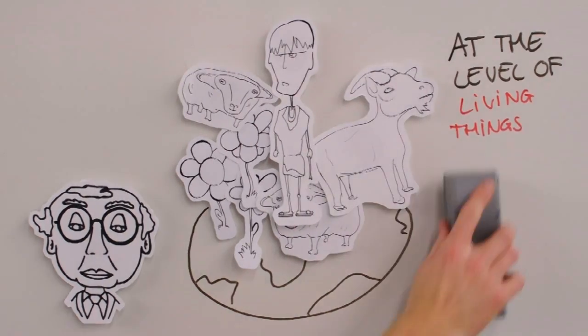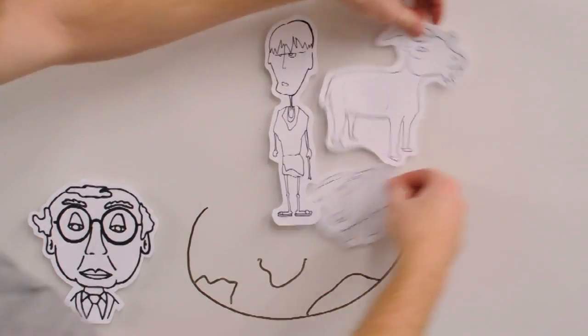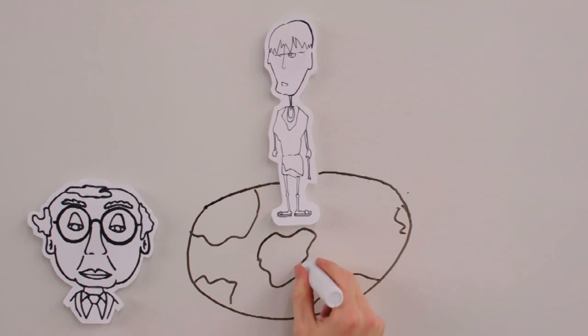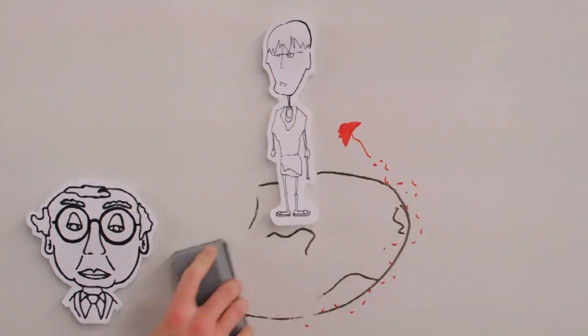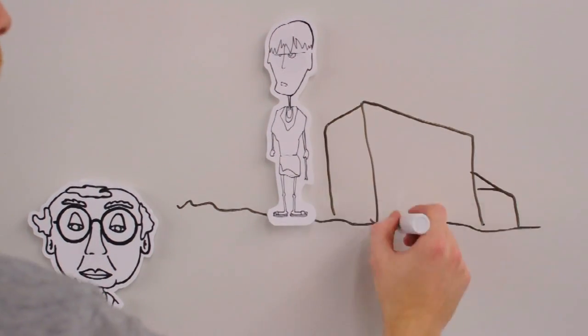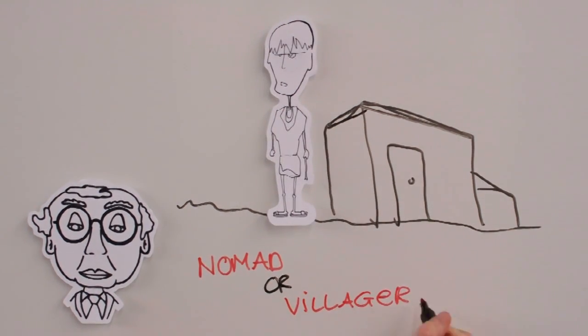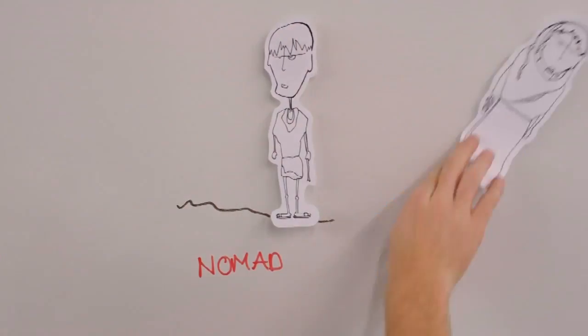With that, there comes an equally powerful social revolution. Because now it became possible, more than that, it became necessary for man to settle. And this creature that had roamed and marched for a million years had to make the crucial decision whether he would cease to be a nomad and become a villager. As for people who never made it, there are few survivors.